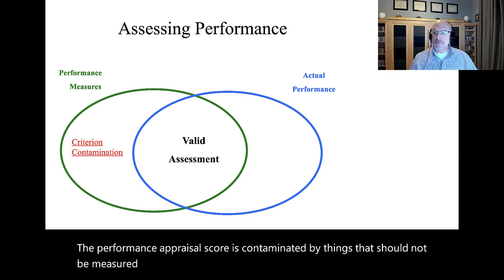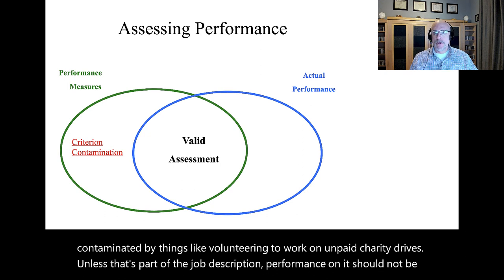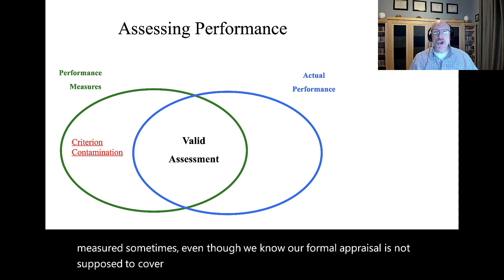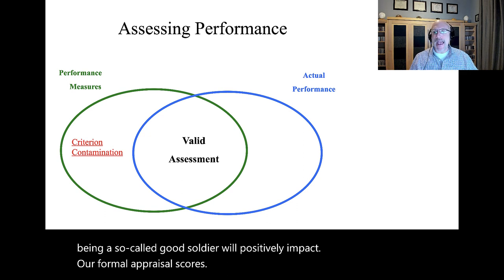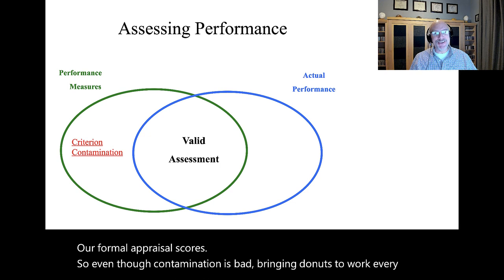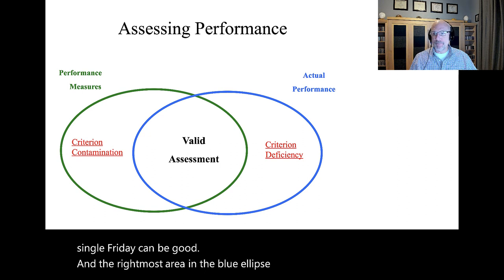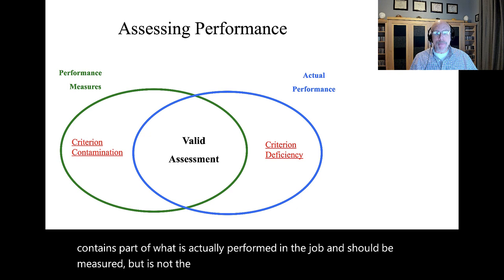For example, some performance appraisals are contaminated by things like volunteering to work on unpaid charity drives. Unless that's part of the job description, performance on it should not be measured. Sometimes, even though we know our formal appraisal is not supposed to cover such activities, we do them anyway hoping that being a so-called good soldier will positively impact our formal appraisal scores. The rightmost area in the blue ellipse is criterion deficiency — this contains part of what is actually performed in the job and should be measured, but is not. The performance appraisal instrument or method is deficient.